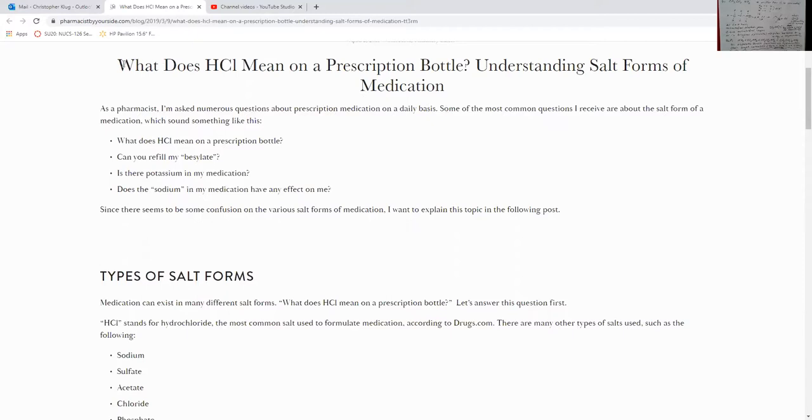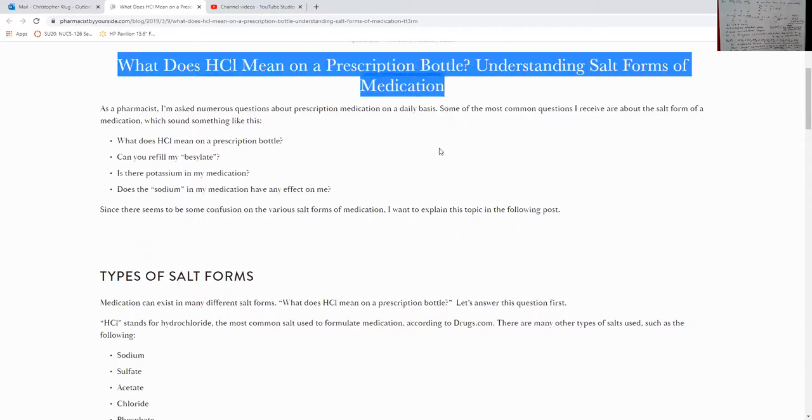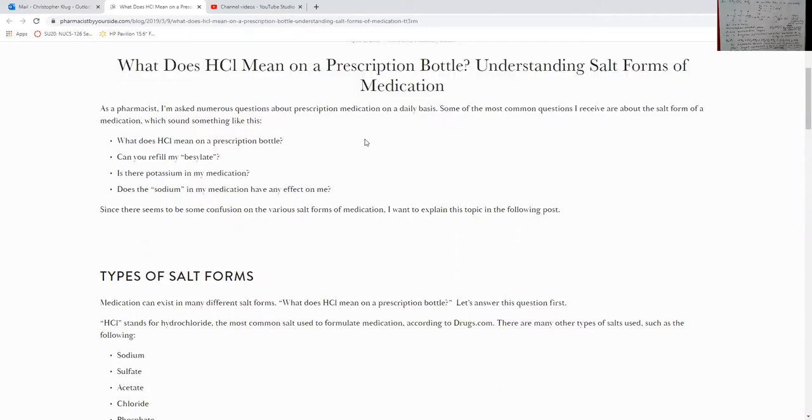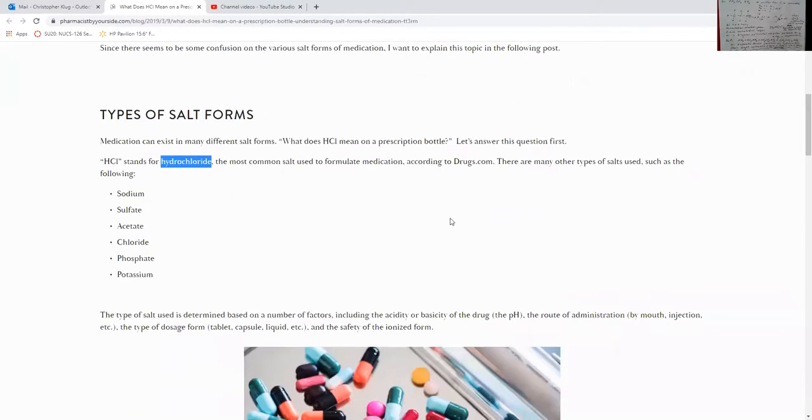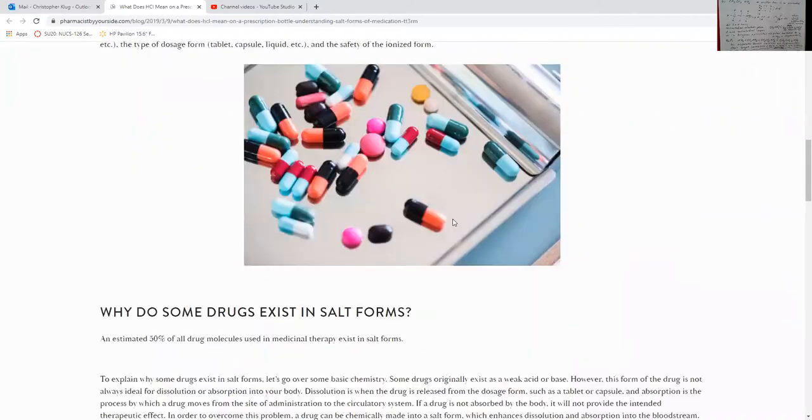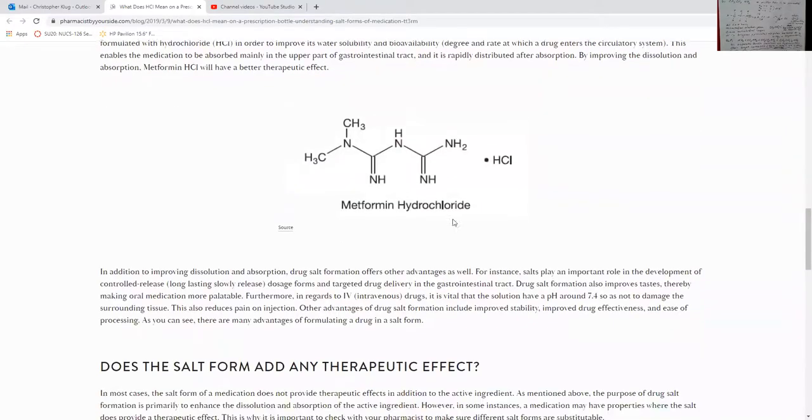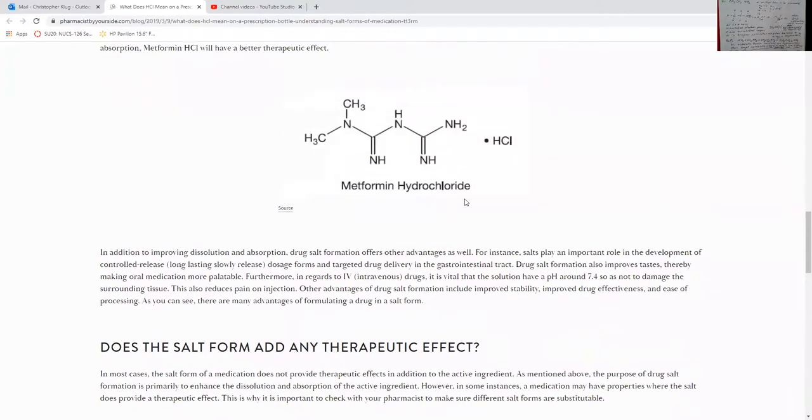And so this blog that supposedly is written by a pharmacist is talking about salt forms of medicine, what it means when you see HCL or hydrochloride or hydrogen chloride at the end of a molecule. And what it really means is what I've shown you in question six, which is where you've got a molecule that you've reacted with HCL and that H from the HCL goes on one of the nitrogens.